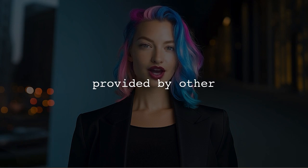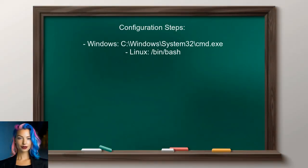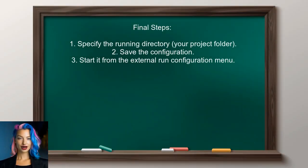Now let's look at the answers provided by other users. An alternative approach to running a system shell in Eclipse is to use external run configurations. First, click the arrow next to the Run button with the Toolbox icon to add a new external run configuration. In the configuration dialog, enter the path to your shell — for Windows, use C:\Windows\System32 or the path to PowerShell; for Linux, use /bin/bash. You can also specify the running directory, which should be your current project folder. After setting this up, save the configuration and start it using the external run configuration menu.